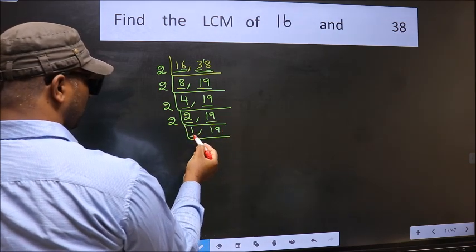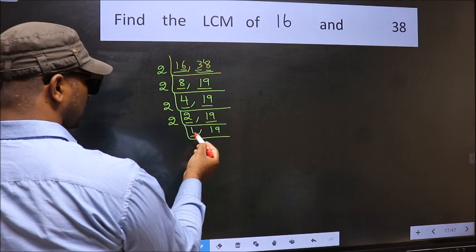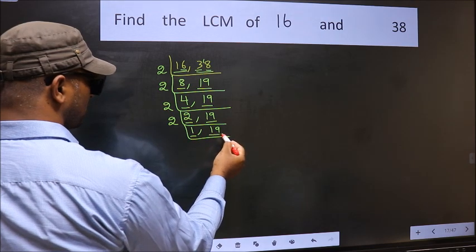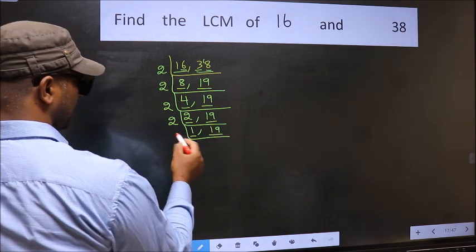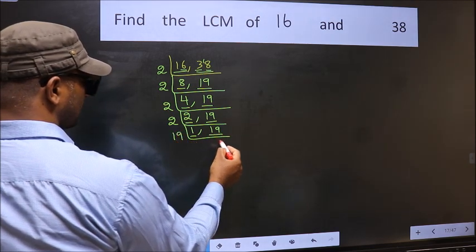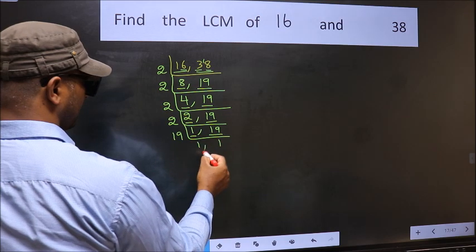We got 1 here, so focus on the other number, 19. 19 is a prime number, so 19 divided by 19 is 1.